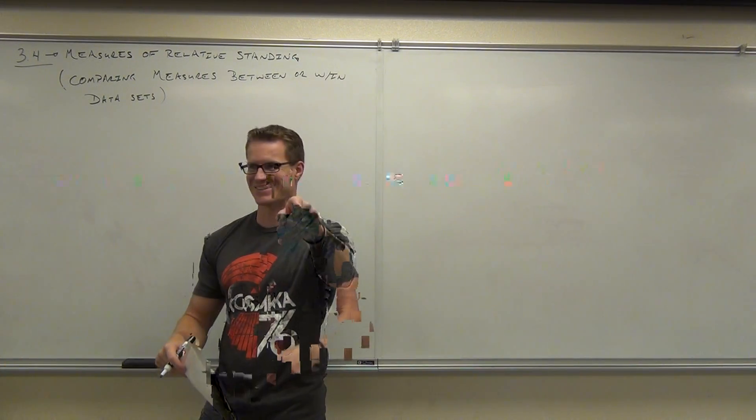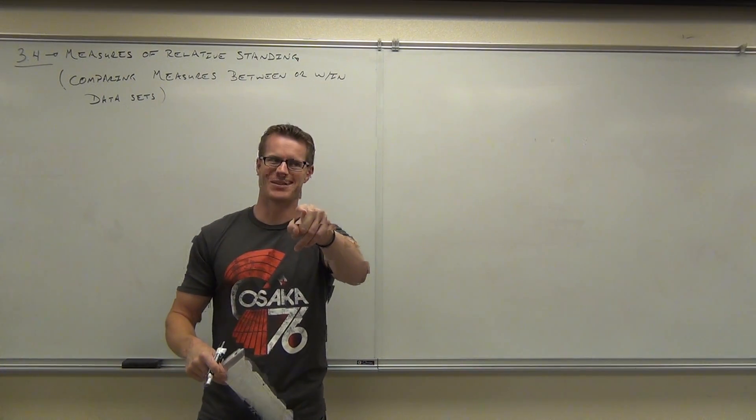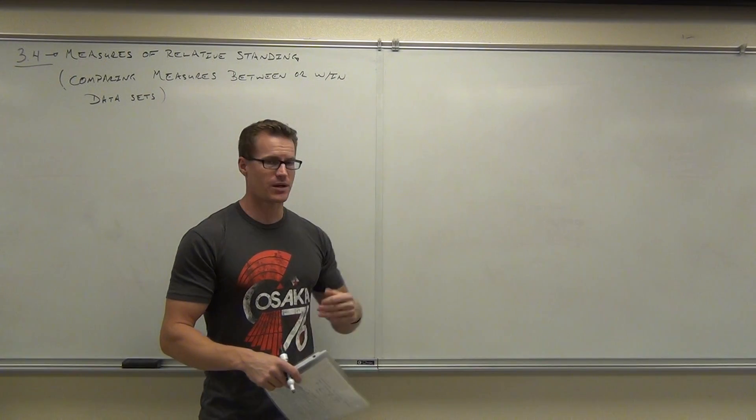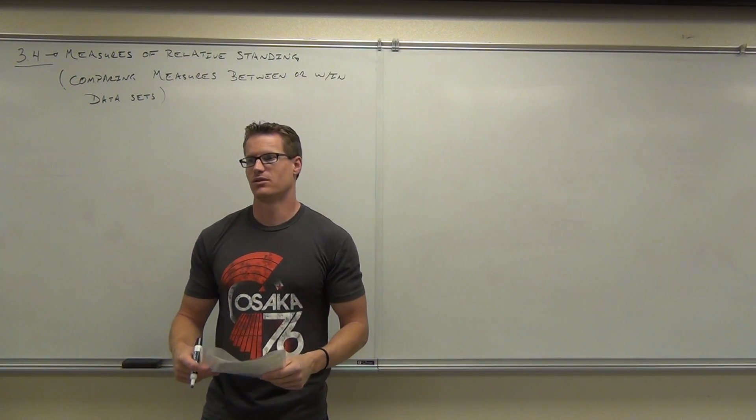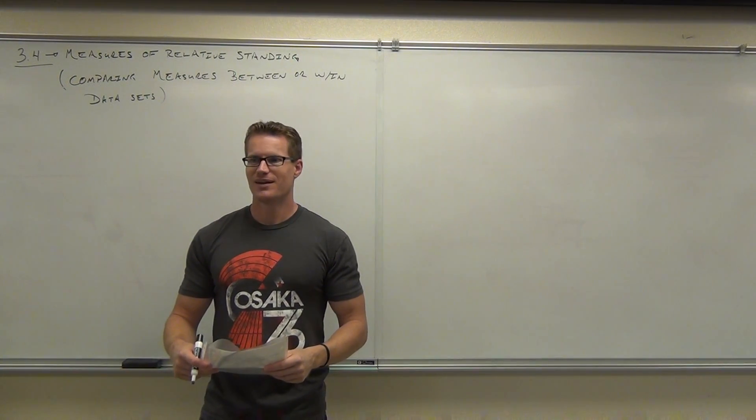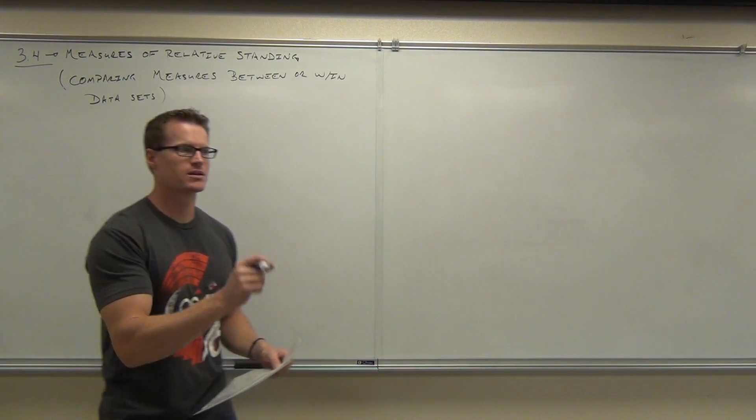When I ask you on your first test, which I will, what is a z-score, you are going to tell me a z-score is the number of standard deviations away from the mean, or more specifically, the number of standard deviations a particular data value is away from the mean. It's on the video now. I can prove it. That's going to be on your test.